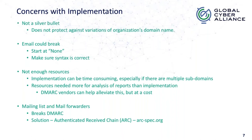DMARC, SPF, and DKIM also don't work well with mailing lists and mail forwarders — it actually breaks all three. The only solution, recently released last year, is Authenticated Received Chain (ARC), which preserves SPF, DKIM, and DMARC when messages are forwarded, so nothing breaks and everything gets delivered correctly. It's just up to the mailing lists and mail forwarders to implement ARC.